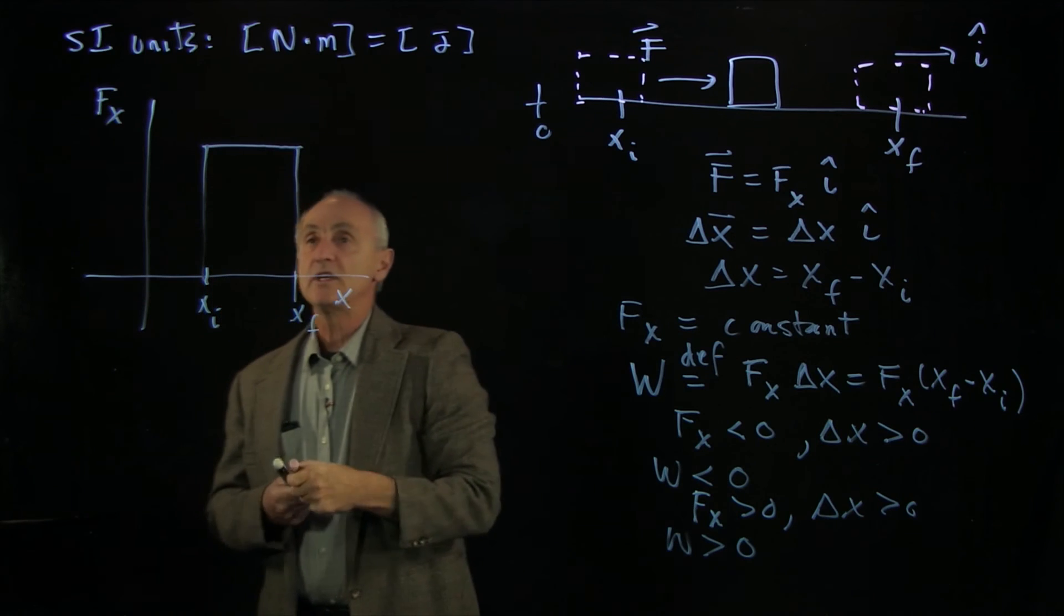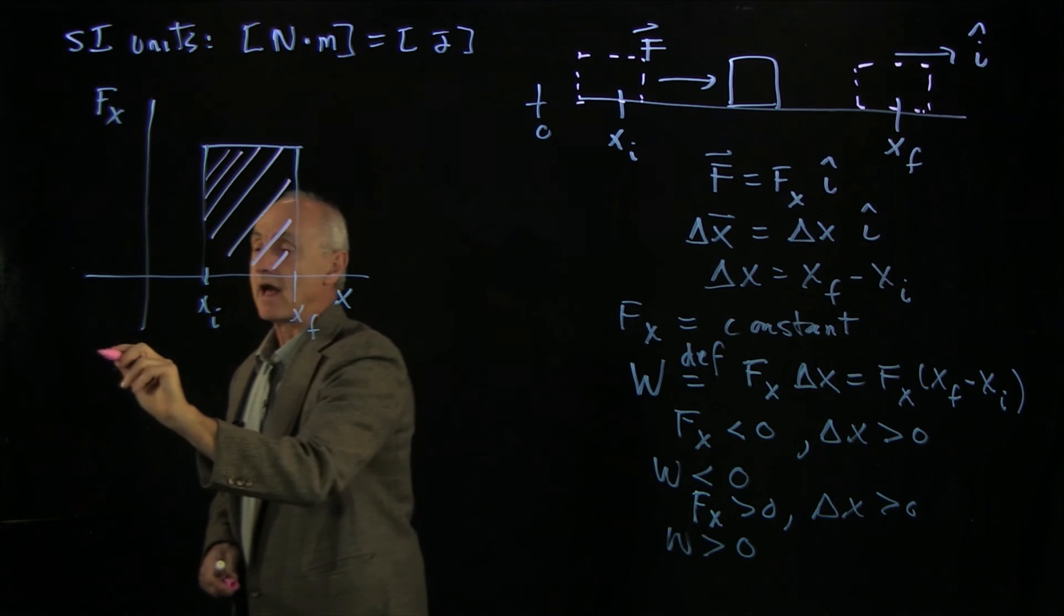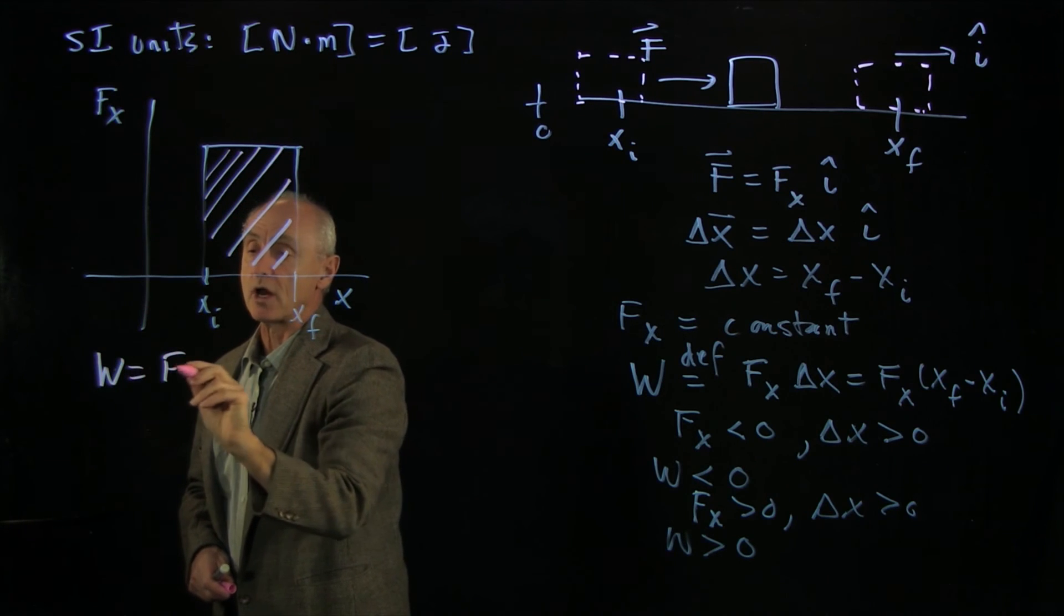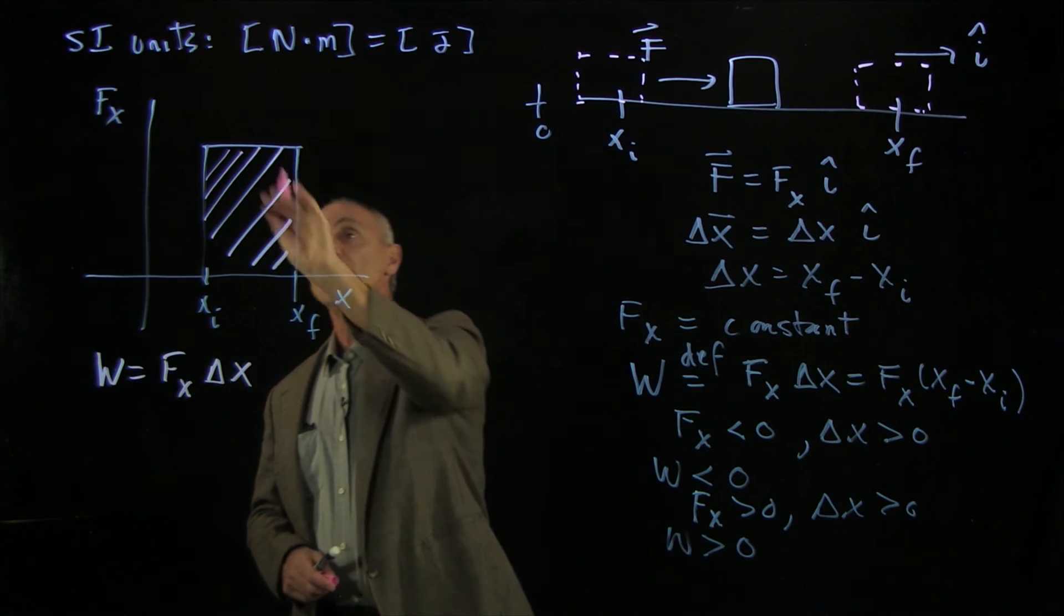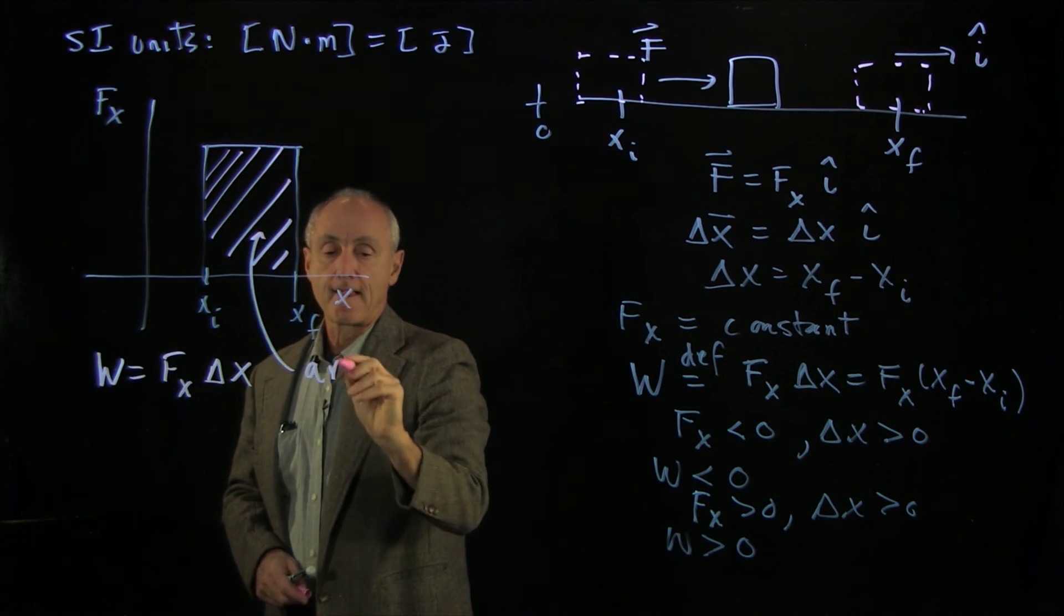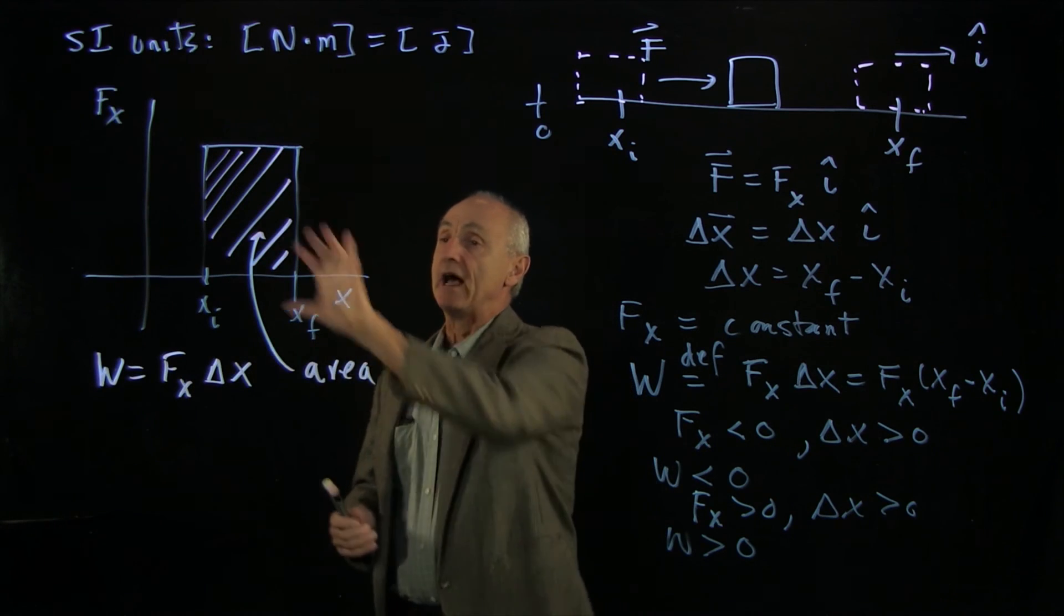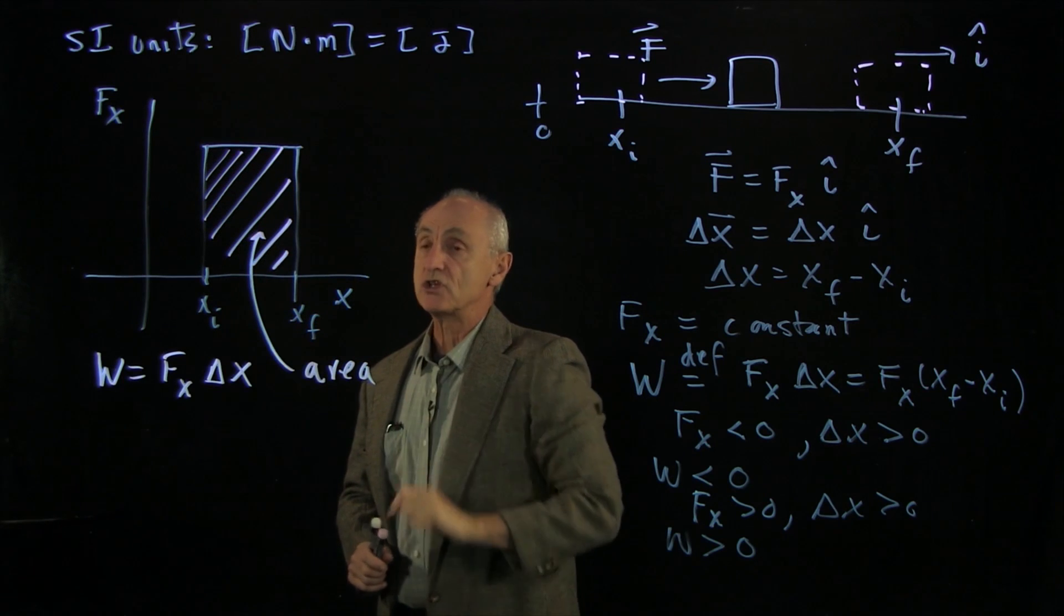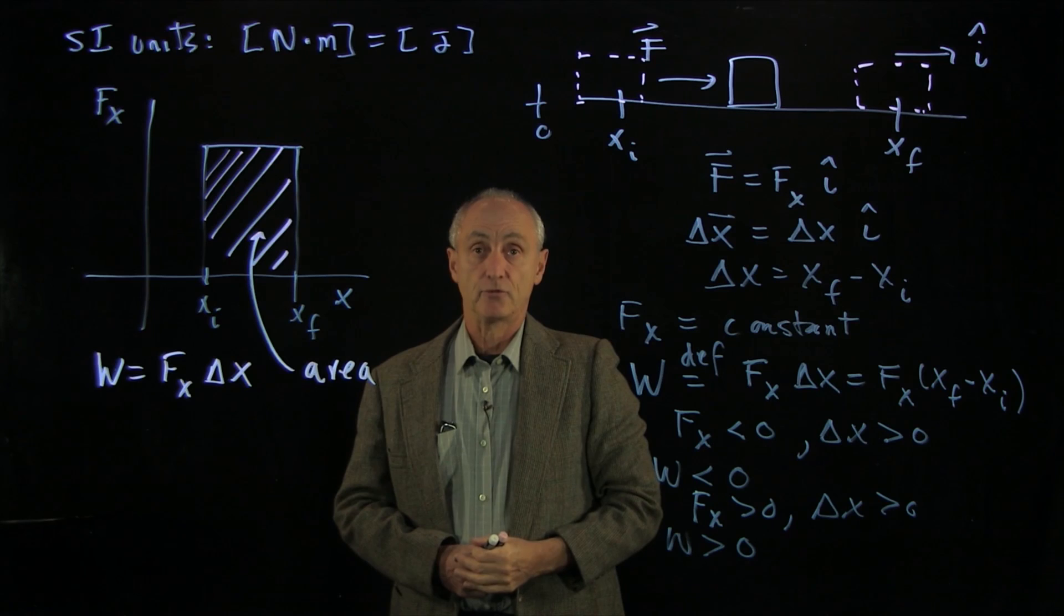So what we see in this diagram here, I'll just shade in this area, that our work, which was the product of force times the displacement, corresponds to the area here. So we have a geometric interpretation of work as the area under the force versus position graph. And this is our example of work for a constant force.